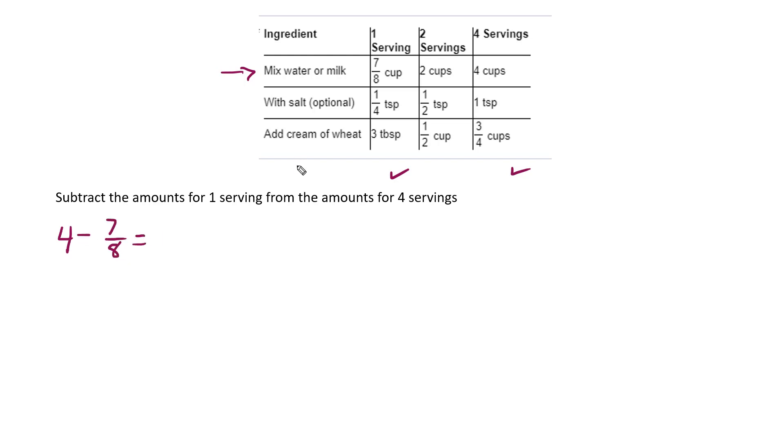So the first line here, you can see that's going to be 4 minus 7 eighths. Well, just like adding fractions, subtracting, you have to have the same denominator. So let's make that 4 over 1. I multiply the top and bottom by 8. That gives me 32 over 8 minus 7 eighths, which gives me 25 over 8 cups.